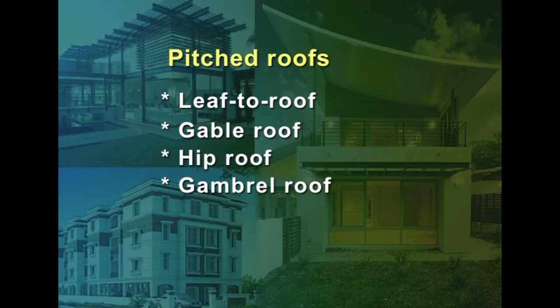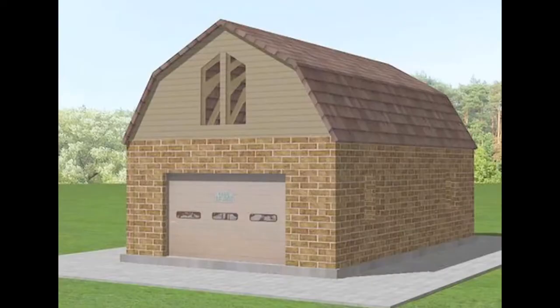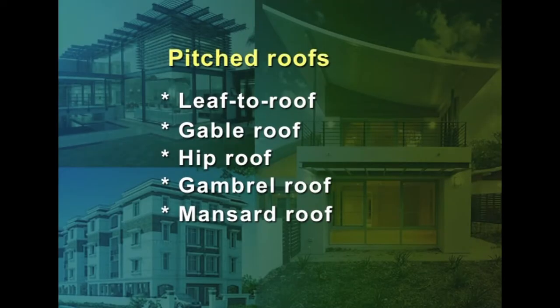A gambrel roof, like a gable roof, slopes in two directions but there is a break in each slope; at each end a vertical face is formed. A mansard roof, like a hip roof, slopes in four directions but each slope has a break, giving sloping ends. A deck roof has slopes in all four directions like a hip roof, but a deck or plain surface is formed at the top.